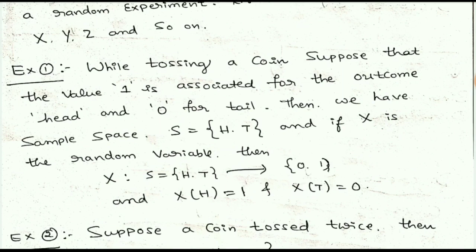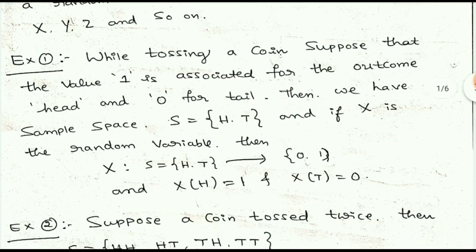Therefore, the random variable X = {0, 1}. If head comes I'll take it as 1, if tail comes I'll take it as 0. X represents a random variable that maps from sample space to the set of all real numbers. So X(H) = 1 and X(T) = 0. It is my definition; you can change it according to your wish.